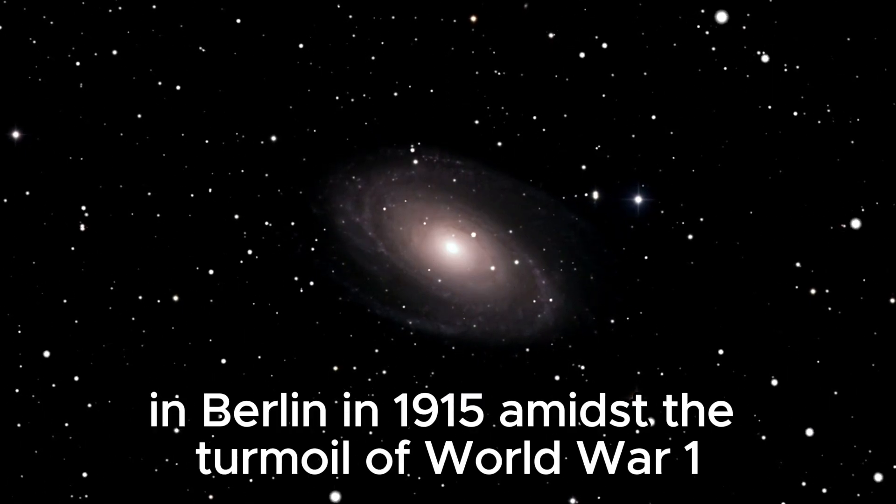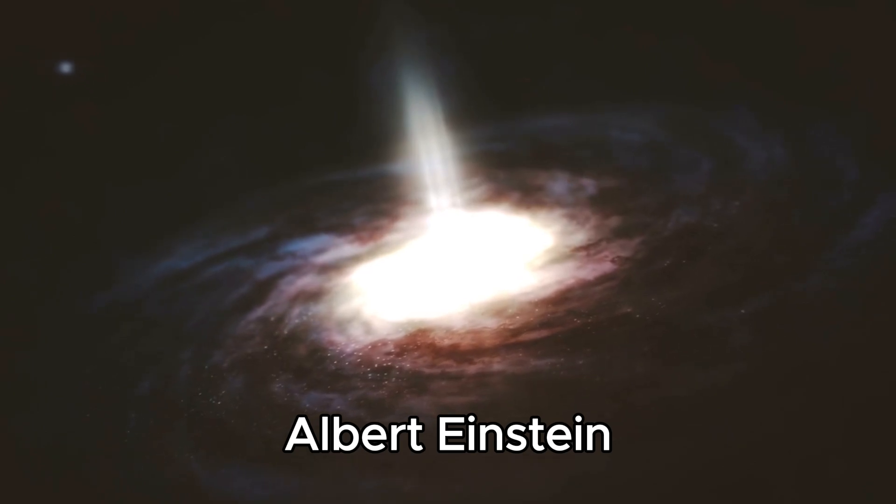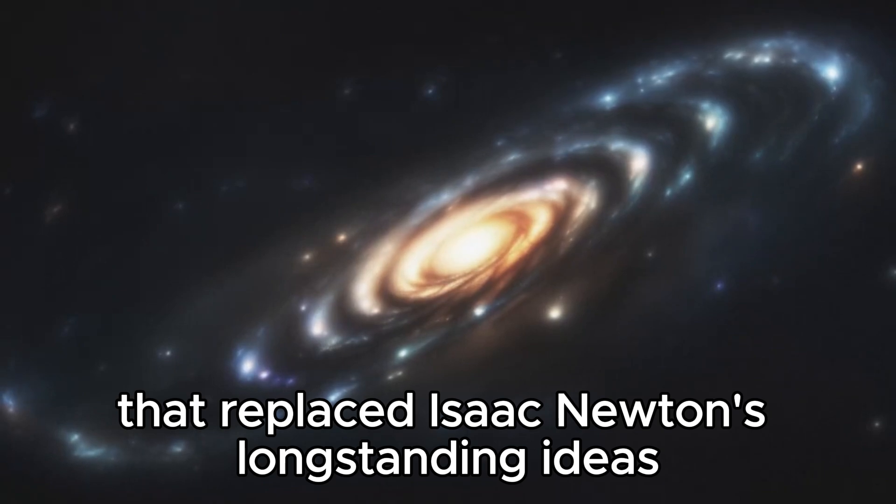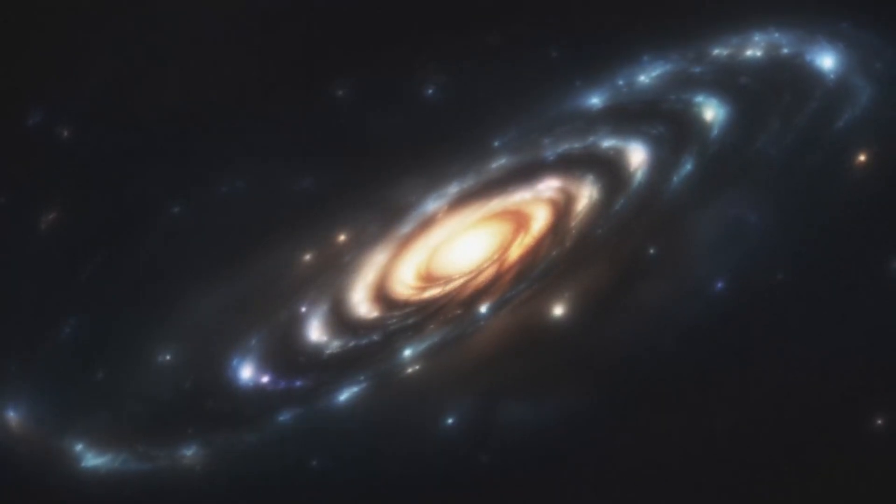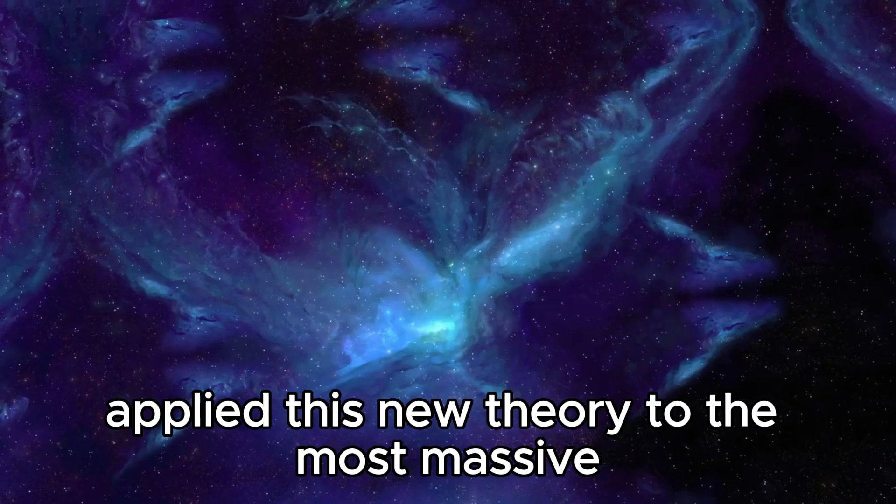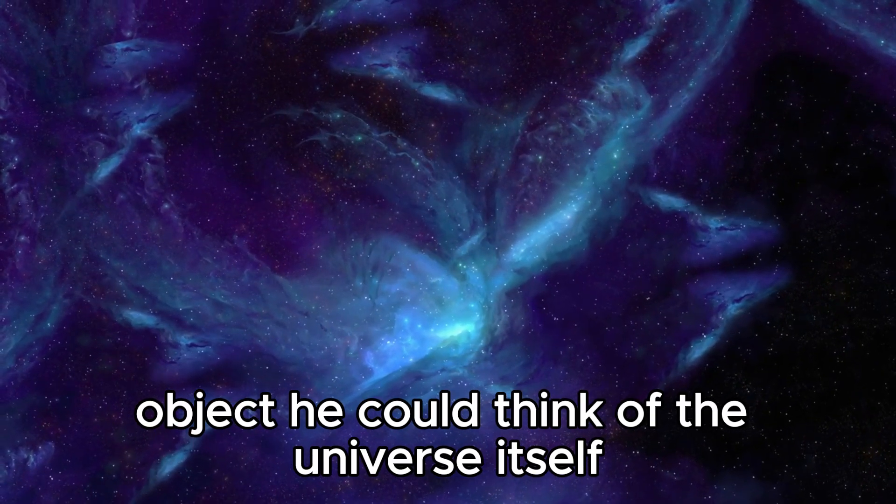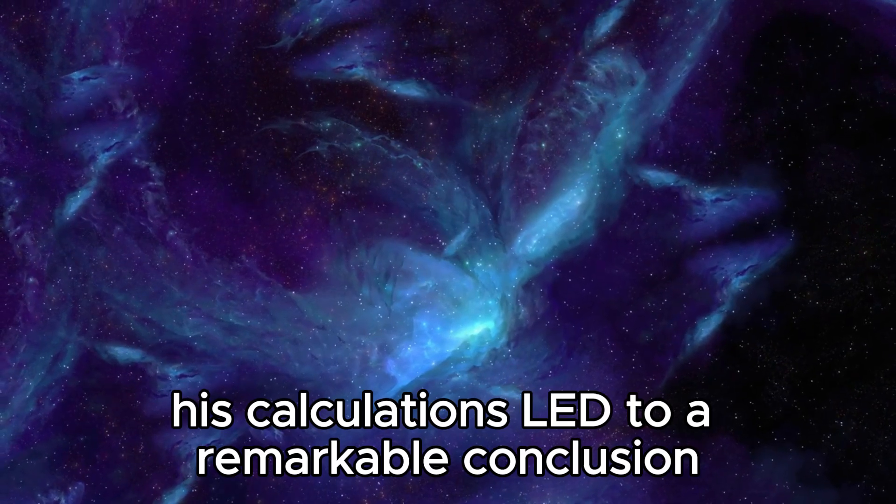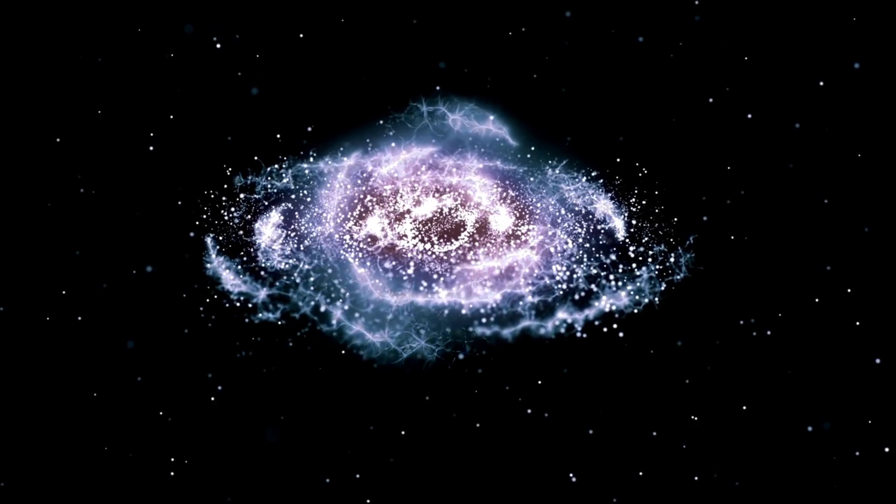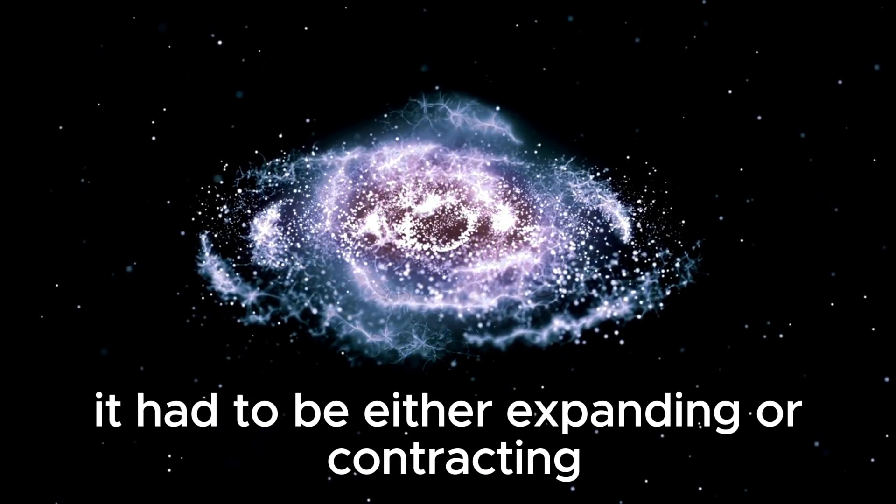In Berlin in 1915, amidst the turmoil of World War I, Albert Einstein introduced a groundbreaking theory of gravity known as general relativity that replaced Isaac Newton's long-standing ideas. By 1960, Einstein applied this new theory to the most massive object he could think of: the universe itself. His calculations led to a remarkable conclusion: the universe couldn't remain still. It had to be either expanding or contracting.